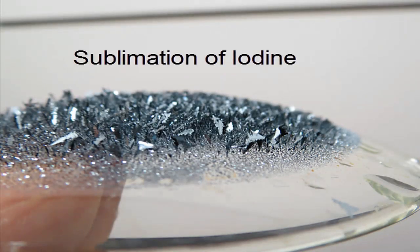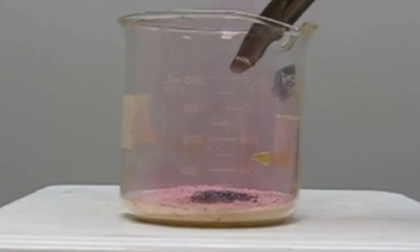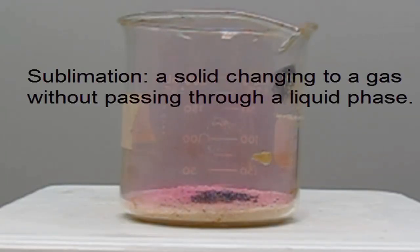In this video, we're going to look at the sublimation of iodine. So when we add solid iodine to hot sand, we have a hot plate underneath there, you can see right away we start getting a purple gas. That is iodine gas, and with sublimation we're going directly from a solid to a gas without passing through a liquid phase.